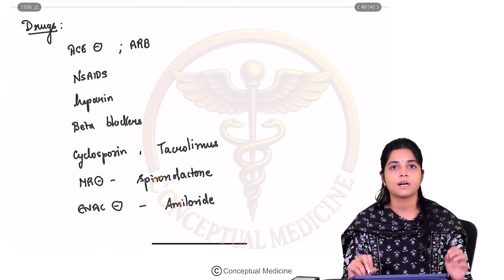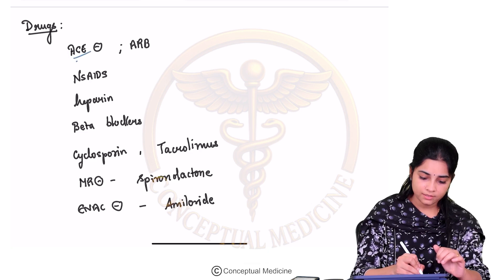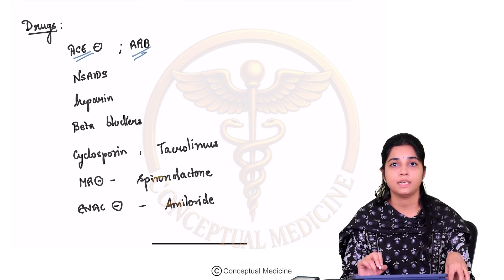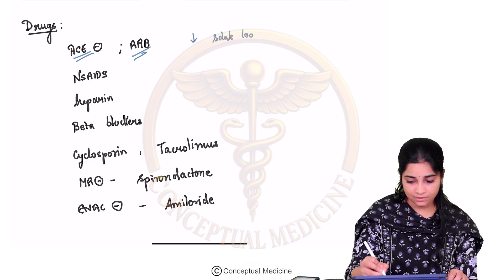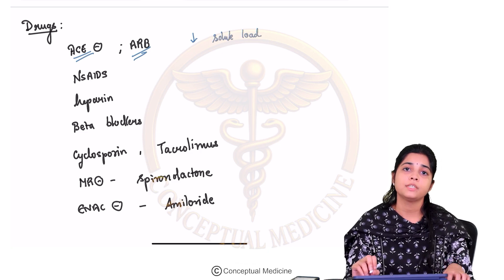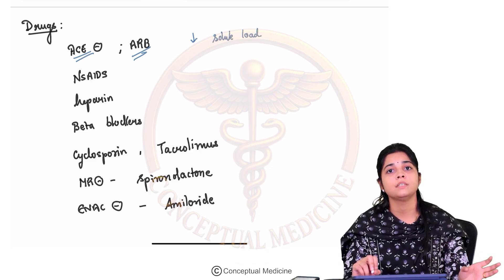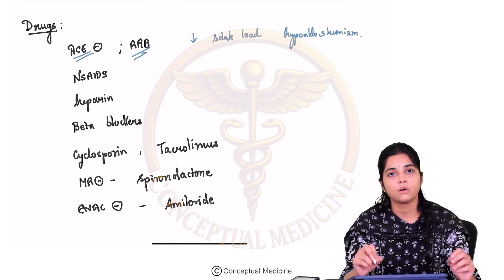Never forget to take a thorough drug history whenever you encounter a patient with hyperkalemia. In hypertensive individuals, always consider ACE inhibitors and ARBs, because these drugs decrease the solute load and inhibit the renin-angiotensin-aldosterone system. In effect, they cause hypoaldosteronism, and that is how they cause hyperkalemia.